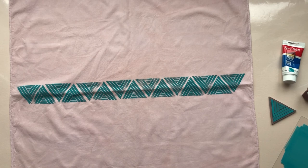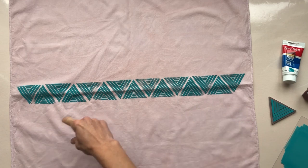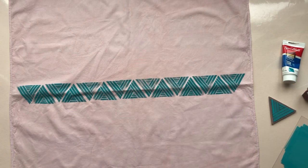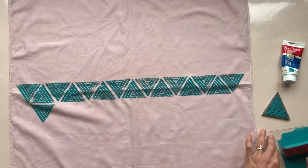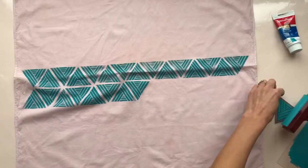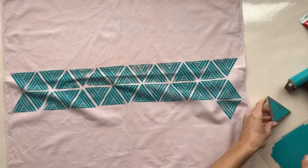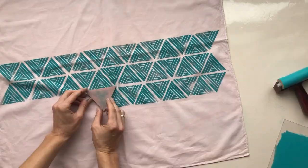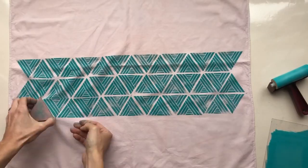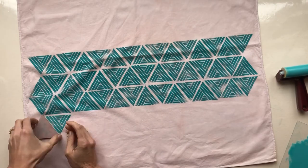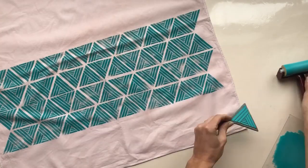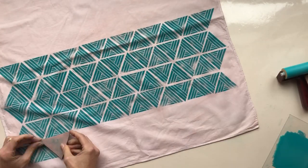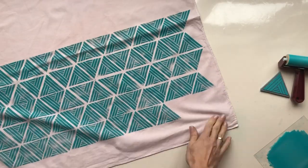So now that I have one full row along the center, I can use this as my guide to start adding more rows above and below. And I'm just going to keep repeating this pattern until I fill the whole thing.